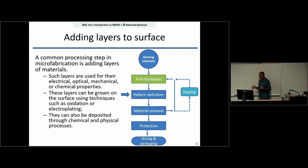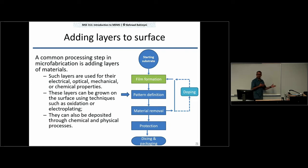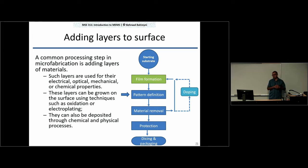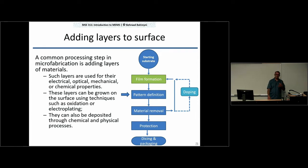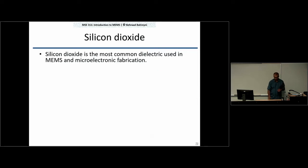These film layers are needed for their electrical properties like metal layers, optical properties like silicon nitride or even some metal layers, and mechanical or chemical applications. Depending on the use case you can use different types of materials. We mainly deposit these materials, but in the case of silicon dioxide we have more than one option.